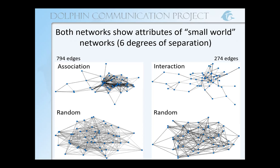We see small world networks in a few different places in the natural world — the neural network of the worm species C. elegans, the power grid of the Western United States, and the collaboration between film actors. You may have heard of six degrees of separation. The human global population seems to have an average distance of six, meaning any two humans can be linked using five intermediate acquaintances on average. These features of small world networks propagate signals such as information — or in humans, gossip more quickly — but can also propagate disease more easily.